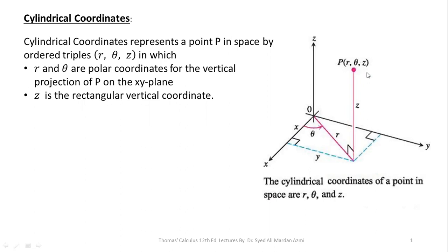Cylindrical coordinates represent a point P in space by the ordered triplet R, theta, and Z, in which R and theta are the polar coordinates for the vertical projection of P on the xy-plane, and Z is the rectangular vertical coordinate. Cylindrical coordinates are actually the extension of polar coordinates in the third dimension. If you consider only the x-axis and y-axis, the coordinate of this point will be R and theta in two-dimensional space, and if we lift this point in the vertical direction with respect to the Z-axis, its coordinates become R, theta, and Z.